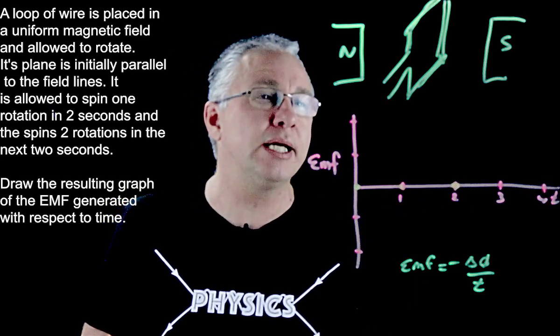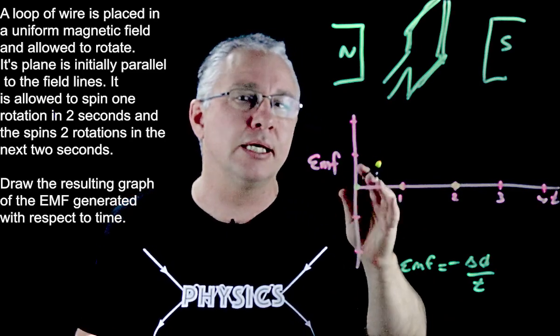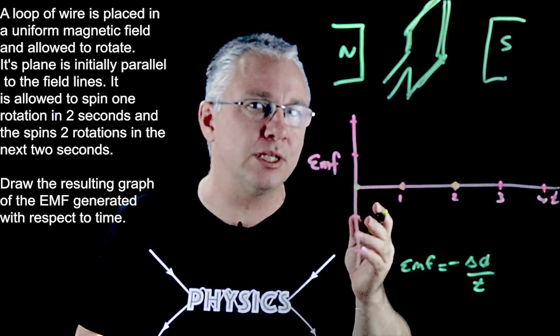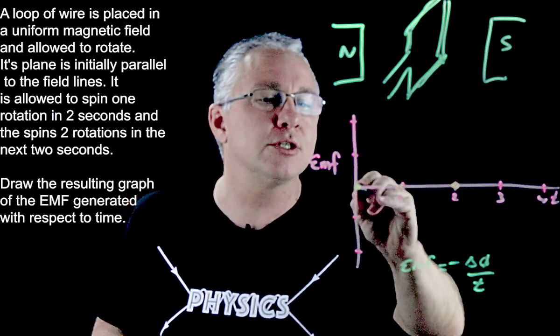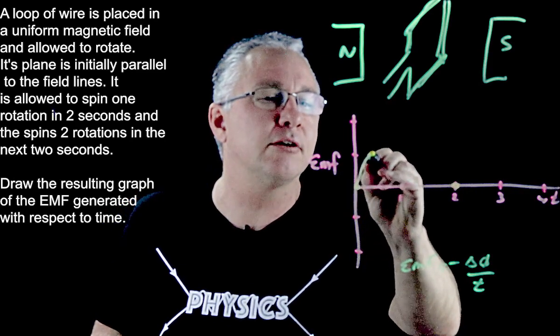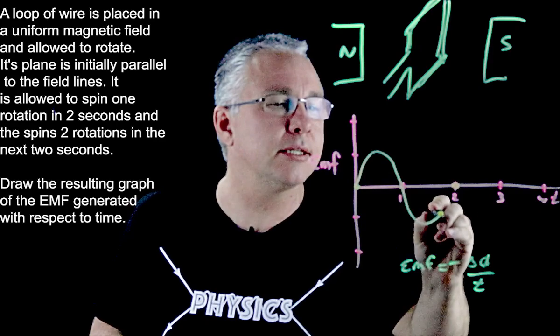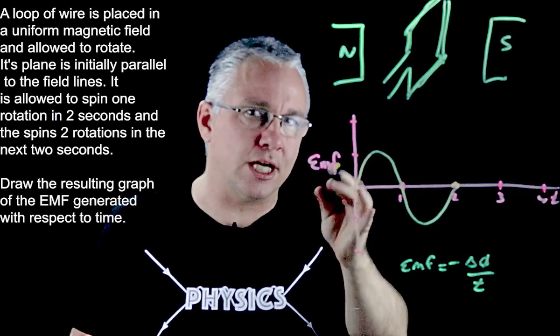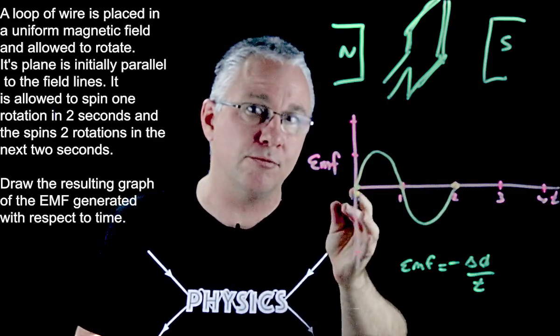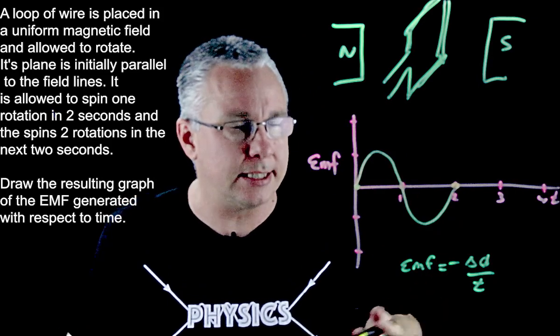And now what happens in between? Well when it turns 90 degrees we have no flux through the loop but that's when the change of flux is maximum. So as a result I'm going to get a graph that looks like this. And there's your classic sinusoidal curve that you have with EMF which is really AC generation.